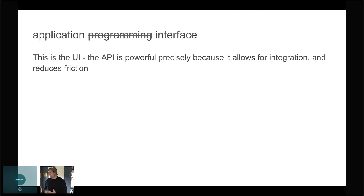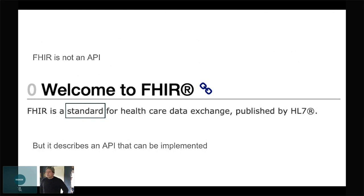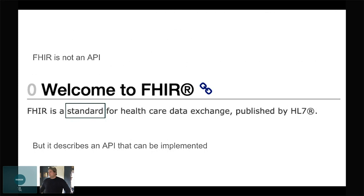If you take out the 'application,' you just have an interface. And this is what FHIR is. I make the bold claim here that FHIR is not an API. The front page of the FHIR documentation says FHIR is a standard — a standard is a little bit different than an API. FHIR does describe an API that can be implemented, and they're pretty clear to talk about implementers and what needs to be done to use FHIR.